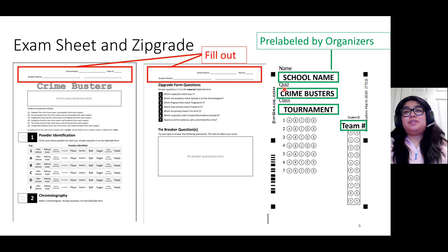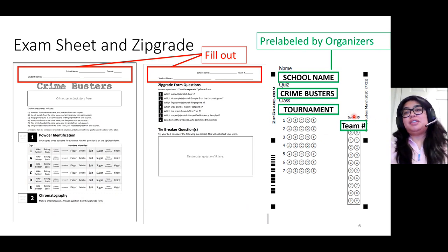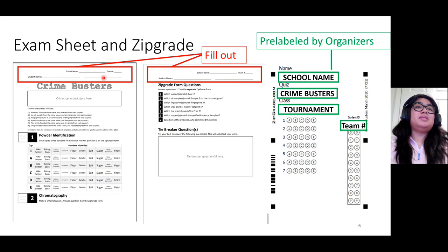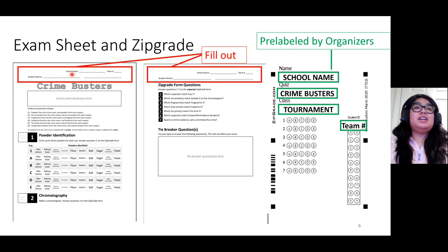The school name, the event, the tournament, and the student's team number will be pre-labeled on the zip grade form. However, students will have to fill out their school name, team number, and their names on the actual exam sheet. Please make sure they know to fill out their names on the exam sheet just for ease of grading.